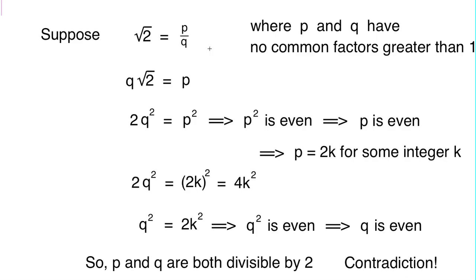So you cannot possibly write square root of 2 as a fraction. Therefore, square root of 2 is an irrational number.